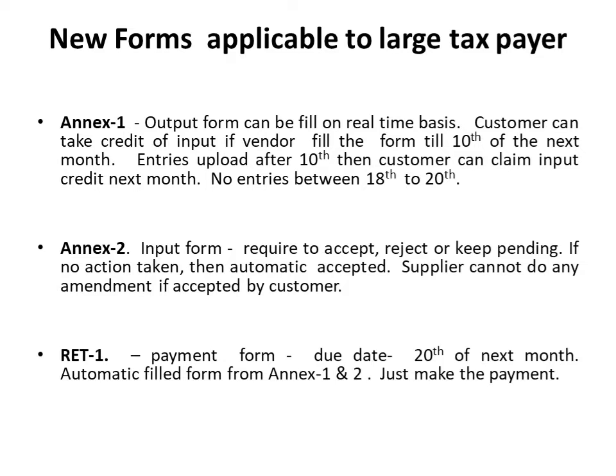Lastly, there is Return 1, which is a payment form. The due date will be the 20th of the next month and it is an automatically filled form from Annexure 1 and Annexure 2. The taxpayer just has to make the payment. So there will be only three forms: Annexure 1 where we put our output before the 10th of the next month, Annexure 2 where we accept, reject or keep pending input on a real-time basis, and on the 20th of the next month we make the GST payment, which is output minus input.